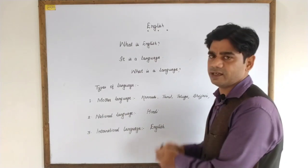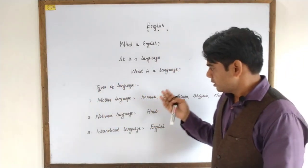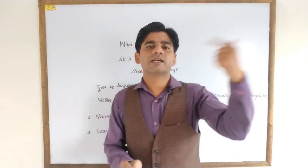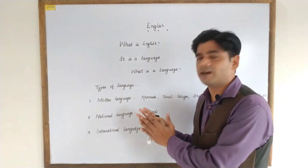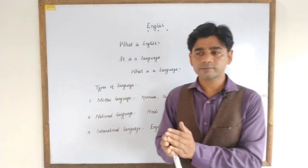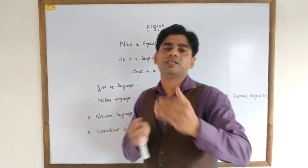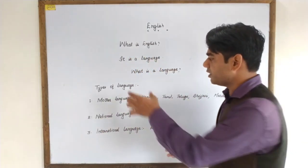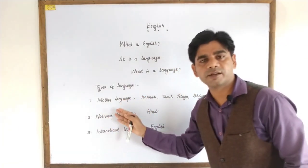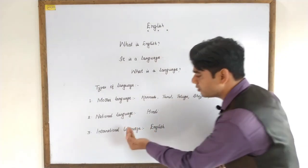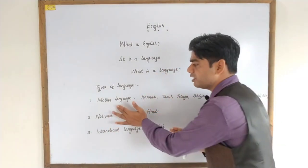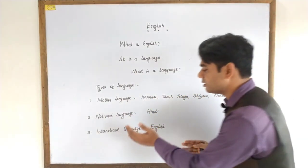Coming back to the next topic: what are the types of language? It is very important to note that there are above 6,500 languages spoken in the world. And if you talk about our country India, there are above 100 languages spoken across the country. Therefore, we have categorized these languages into three categories: the first is mother language, the second is national language, and the third is international language.